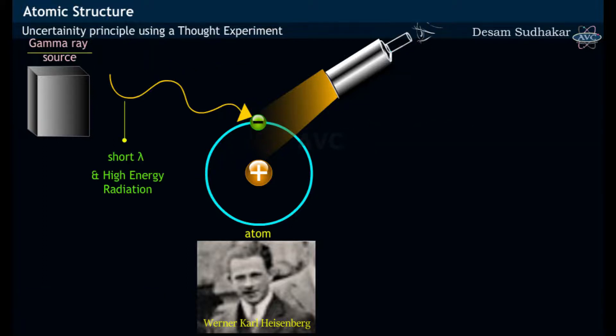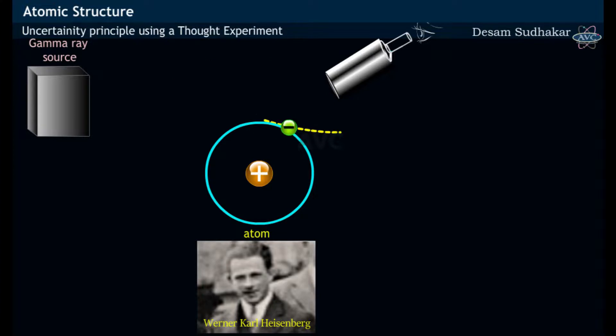At this moment, a short wavelength and high-energy gamma ray acting as a particle collides with a subatomic particle electron. Thereby it transfers its energy as well as momentum to the electron. This causes the electron to take a different pathway.